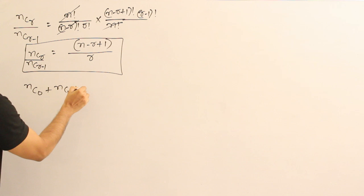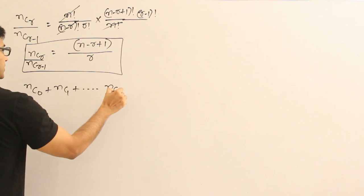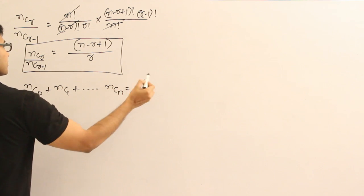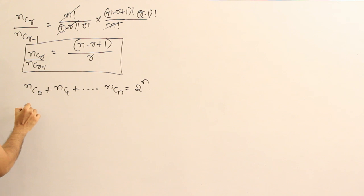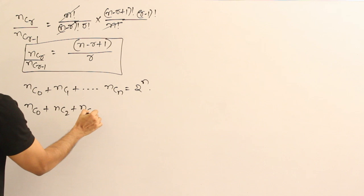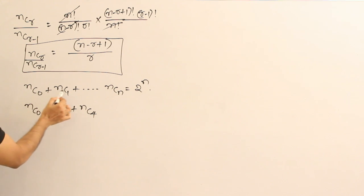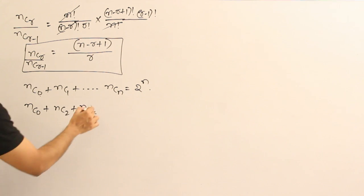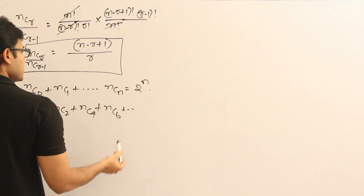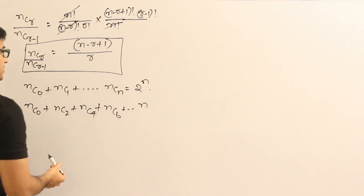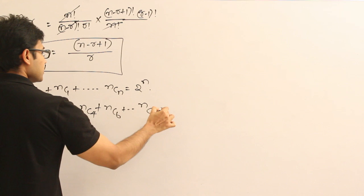One result is, NC0 plus NC1 plus so on plus NCN is equal to 2 power N. And similarly, NC0 plus NC2 plus NC4, which means sum of even terms. This is sum of all the terms from 0 to N and this is sum of all the even terms. NC0 plus NC2 plus NC4 plus NC6 plus so on. Let us assume that N is even. Then, NCN.